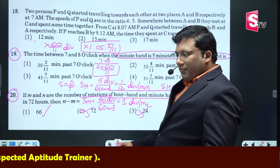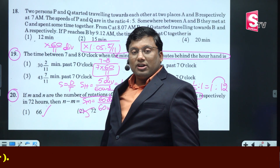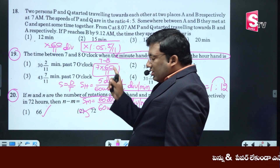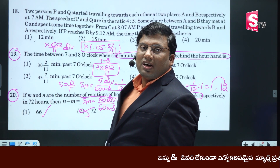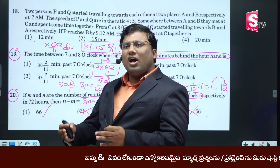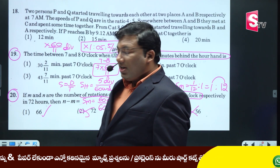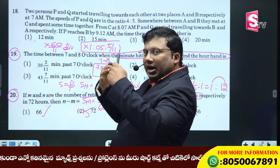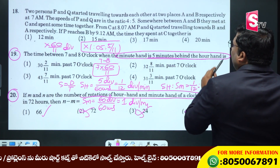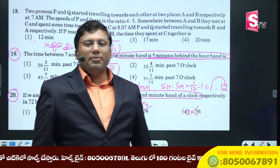The answer is 1. That is, between 7 and 8 o'clock the hands coincide. How many times is 7 into 60 by 11? 7 into 60 by 11 is 420 by 11, which is less than 40 minutes. But it's not the same here — the minute hand is 5 minutes behind the hour hand.